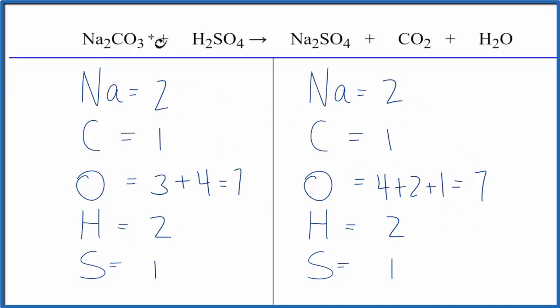Where people often have problems, they'll see these three oxygens and forget these here. Or on this side, you have four oxygens plus two plus one that gives you seven. You have to count all of the oxygens.